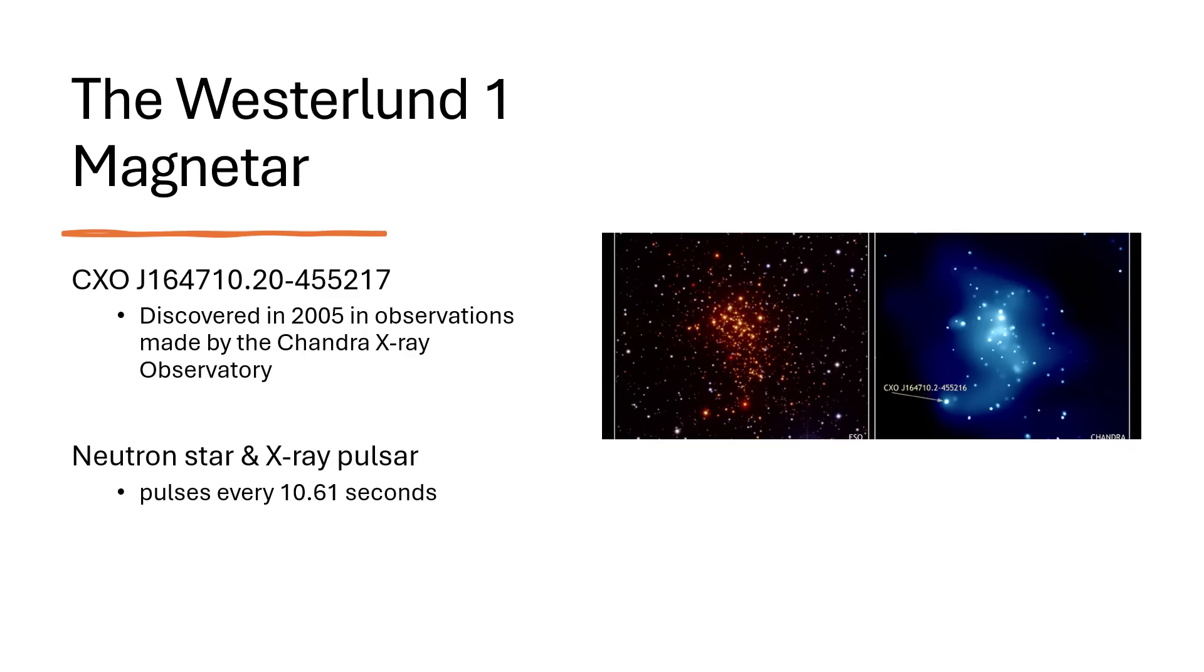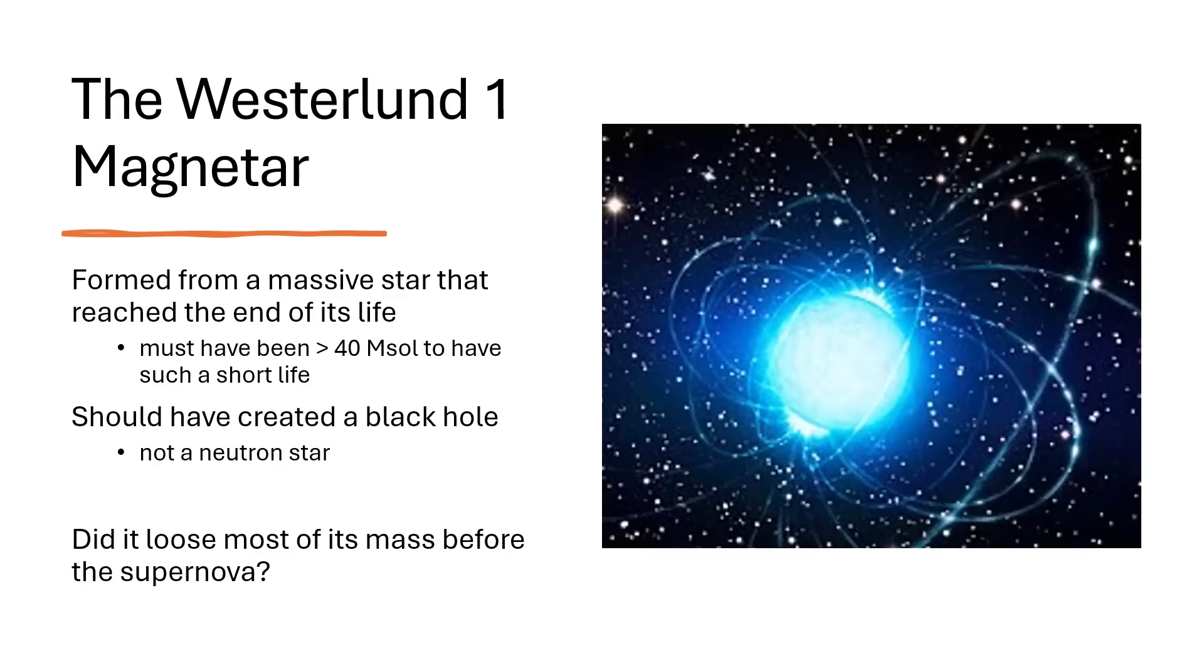Absolutely, astonishingly violent object, but spinning quite slowly. Many spinning neutron stars, pulsars, spin hundreds or even a thousand times a second. This takes 10 seconds to go around, so it is rather unusual. And it's likely that this formed from a very, very massive star at the end of its life.